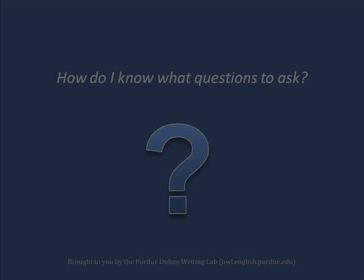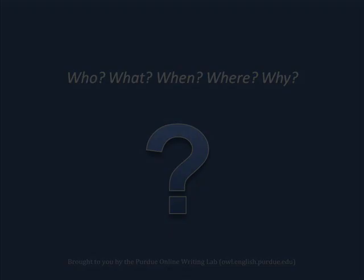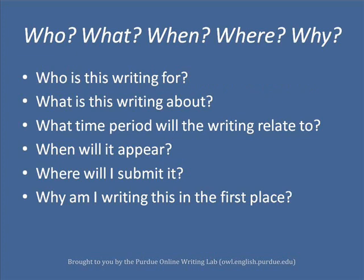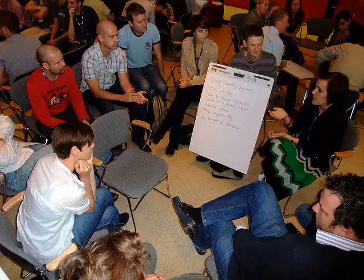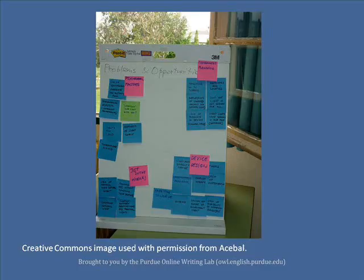How do I know what questions to ask? There are a number of activities you can do to help you create or invent such questions. To begin with, you can ask the who, what, when, where, and why questions — such as: who is this writing for? What is this writing about? What time period will the writing relate to, or when will it appear? Where will I submit it? Or even as simple as, why am I writing this in the first place? For each question, you can begin jotting down any and all answers that come to mind. This is a process referred to as brainstorming. In addition to taking notes and brainstorming, you can also begin constructing an outline to help you organize your thoughts.